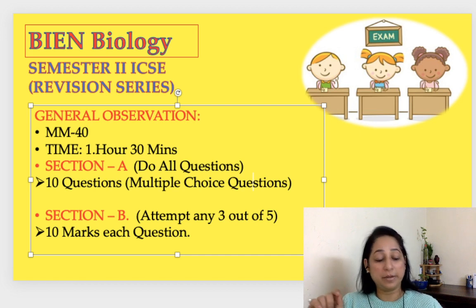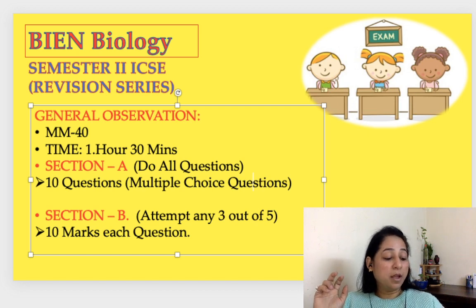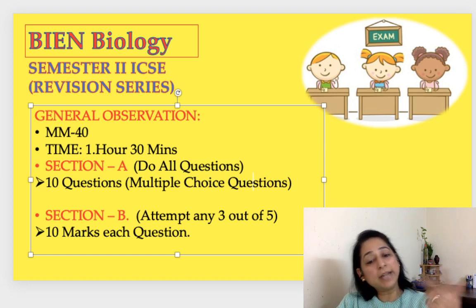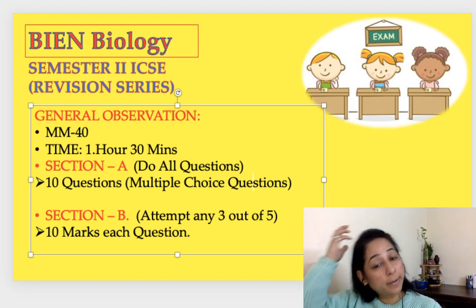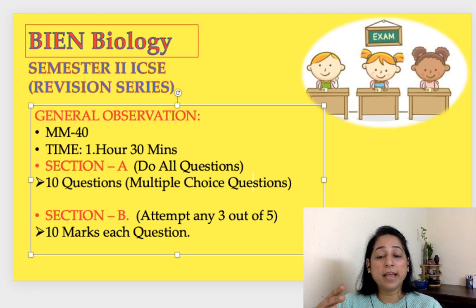As I understood, in question one: one is from endocrine, two from circulatory system, one from nervous system. Question two: two from circulatory, two from excretory. Question three: two from endocrine and two from circulatory. Question four: two from nervous system, one from endocrine. Question five: two from endocrine, two from nervous system. This is how they have tried to cover everything.